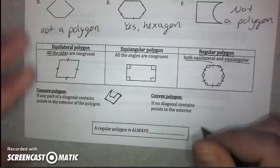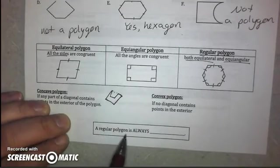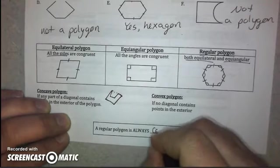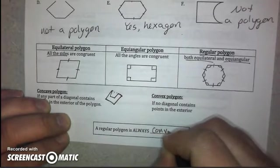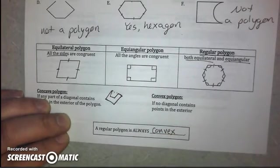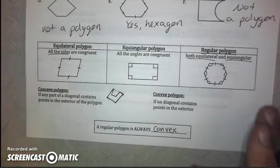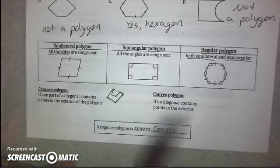And as long as it's not concave, then it is convex. If all the diagonals go through the interior, that means no diagonal contains points in the exterior. Everything is always angled outward. Then it's convex. Because of the way that regular polygons work, regular polygon is always convex. If it is a regular polygon, it has to be convex. It cannot be both concave and regular.